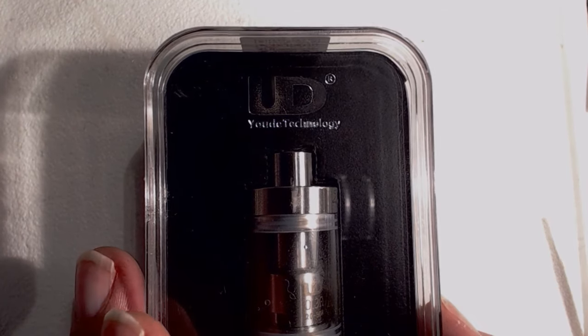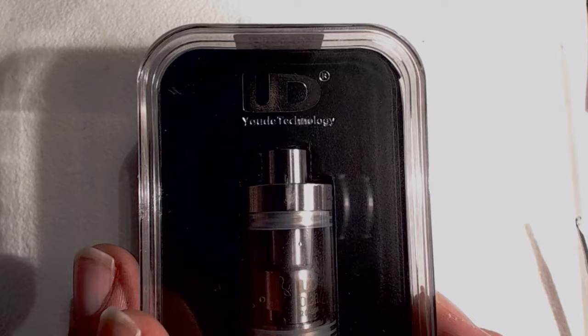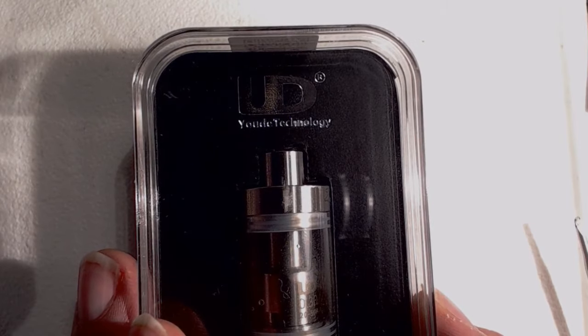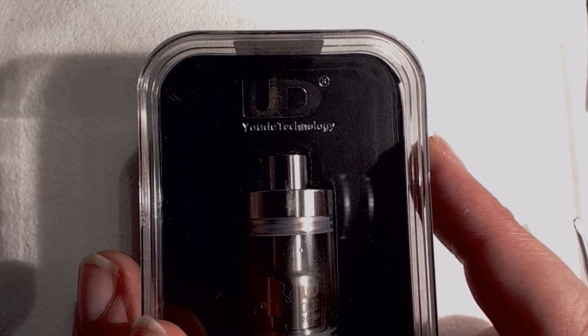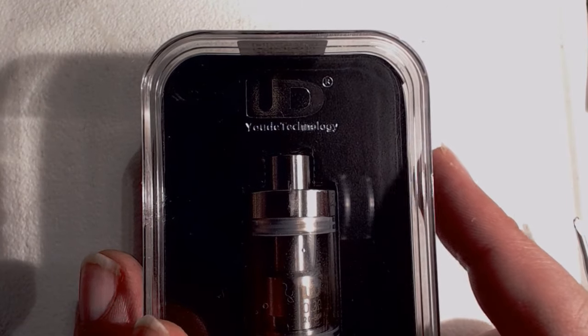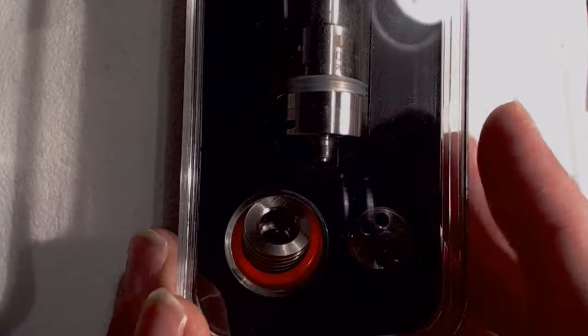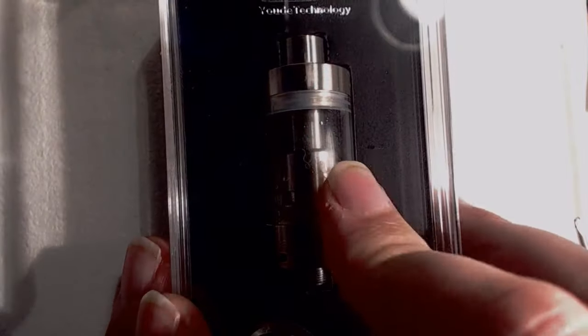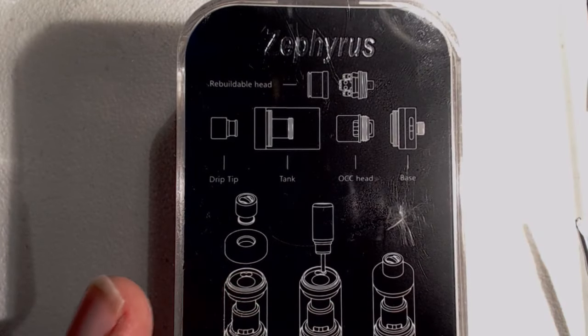Here we go then, so here we've got the UD Zephyrus, UD or Ude, who knows, they keep changing. It says UD up there and Ude down there. I suppose Ude is phonetically correct. Anyway, let's have a quick look at the packaging. It comes in this sort of Apple-like presentation package. You can see we've got the actual tank itself, some bits and bobs there, and on the back we have some ratings and diagrams.